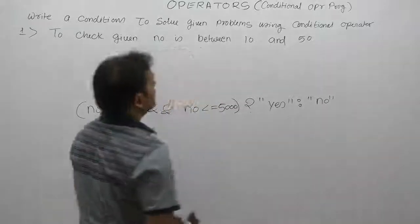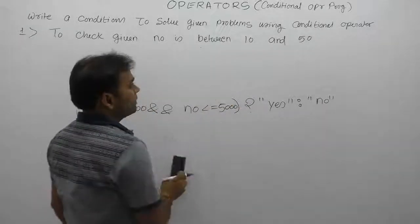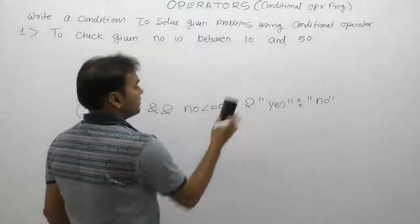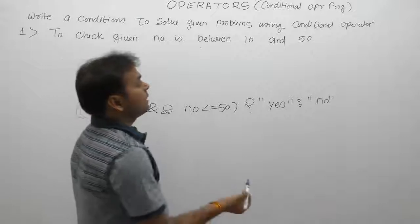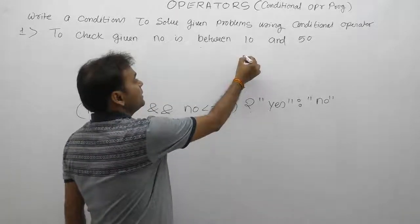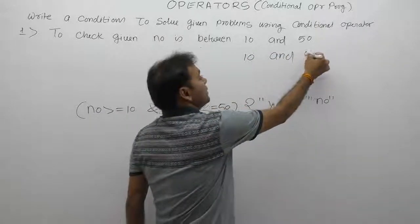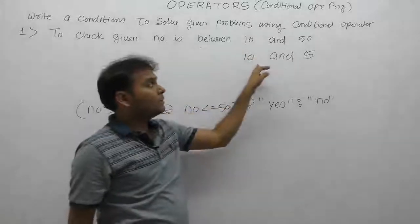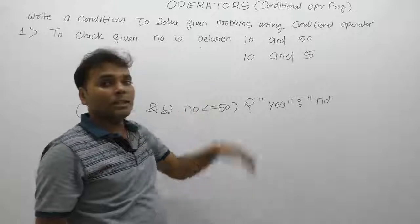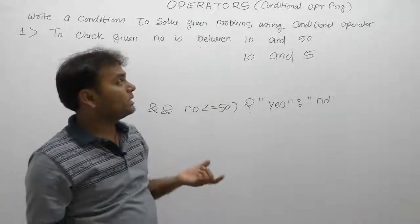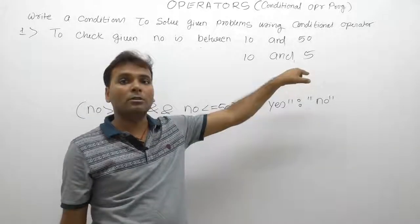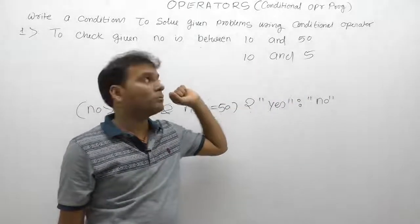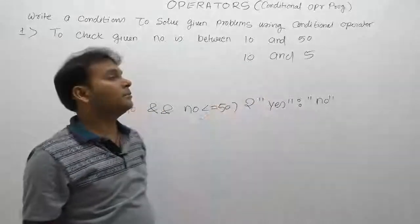For problem one, the minimum limit is 10 and maximum limit is 50. Now, suppose we have a question like: check if a given number is between 10 and 5. Logically, this question is incorrect — if 10 is the minimum limit and 5 is the maximum limit, this is an invalid question, because no number can possibly be greater than 10 and at the same time less than 5. A number can either be greater than 10 or less than 5, but not both. Therefore, this limit is invalid.